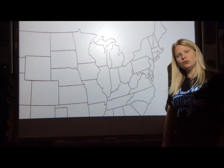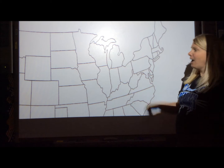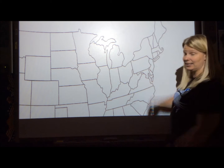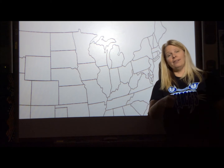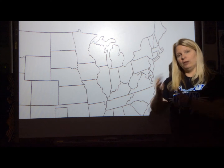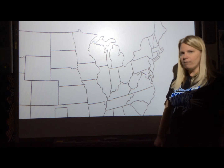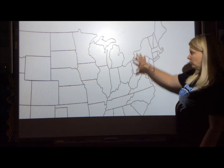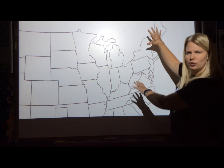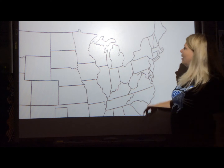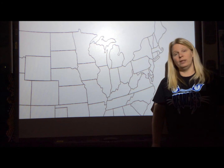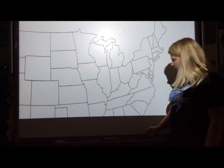I hope you enjoyed that video. Now we're going to talk about the Northeast and you're going to have to label your map. Flip your map over — it looks kind of like this, except mine is a little bigger so you can see it. We're looking at the Northeast region.